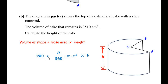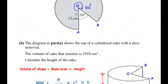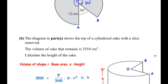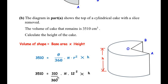The formula for volume of any shape is base area times height. The base area is the same as the top area, which is the major sector. We write: 3510 equals the area of the sector, given by theta over 360 times πr², times the height. Here theta is 310 degrees and r is 12 centimeters.